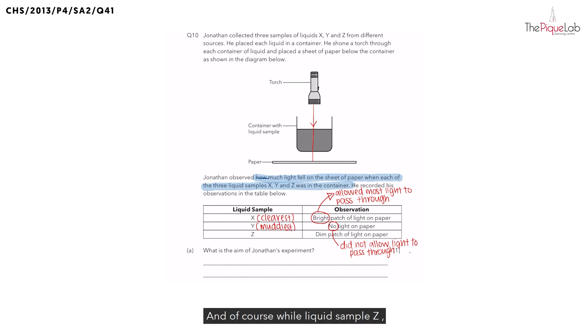And of course for liquid sample Z, we noticed that there was only a dim patch of light on the paper. That means it allowed some, not the most, some light to pass through. So now let's look at part A.